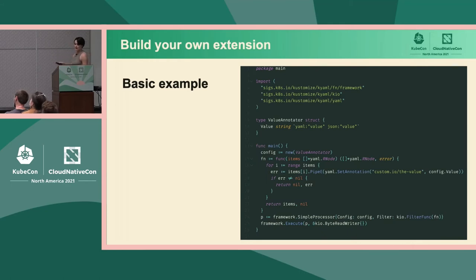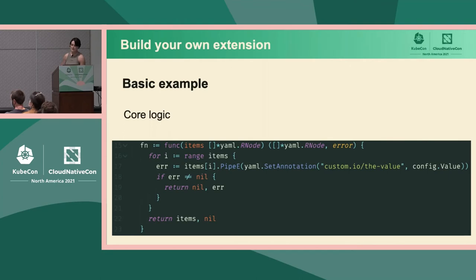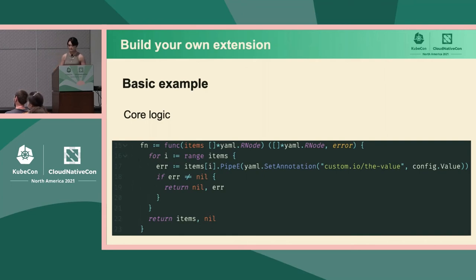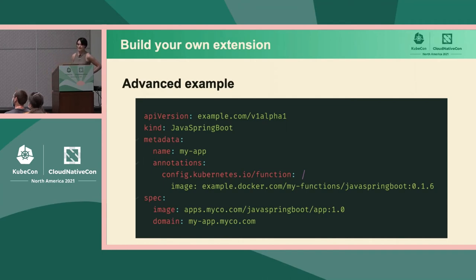The entire implementation of this simple extension fits in just 26 lines of Go. The important thing to notice is the signature of the function we're implementing. It takes the list of items from the resource list — the framework takes them out of the resource list received as input on standard in and passes them to our function. We do the work in the body of the function and return those items. The framework then takes the items we give it, writes them into a resource list, and outputs them on standard out as required by the specification. The `pipeE` and `setAnnotation` helpers from KAML help you do simple YAML manipulations for common transformations.